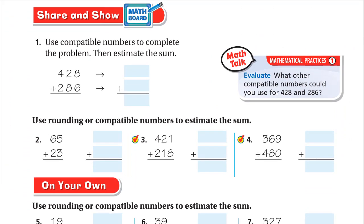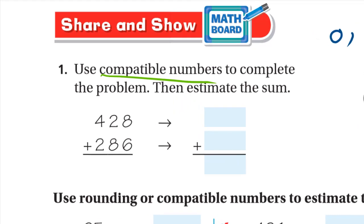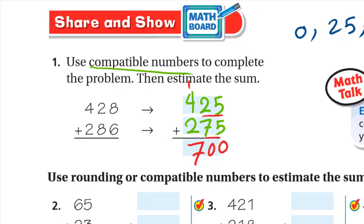Now for share and show. Number 1, use compatible numbers to complete the problem, then estimate the sum. So here we use compatible numbers. 428, remember we said 0, 25, 50, or 100. So 428 is close to 425, and 286 we can use 275 or 300. Both are correct, no problem. Here I'll use 275. Now we add 25 plus 75, these are 100, so I write two zeros and carry up 1. 4 plus 2 is 6 plus 1 is 7. So it's about 700.